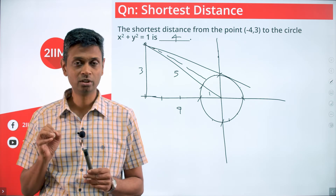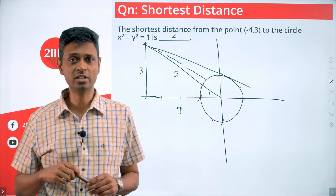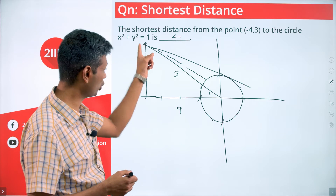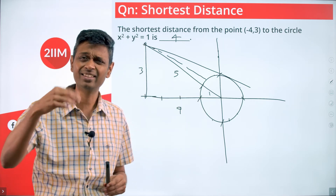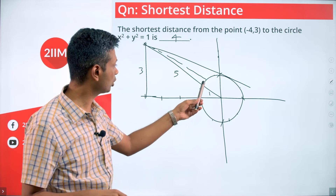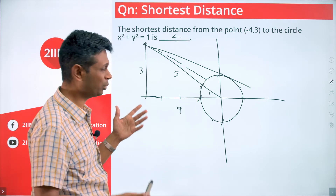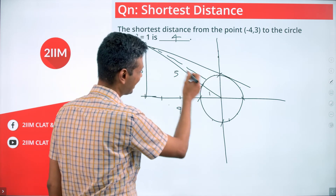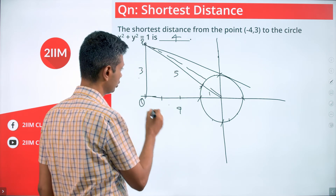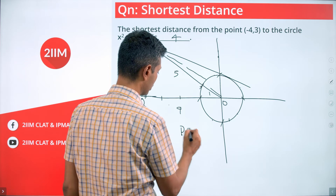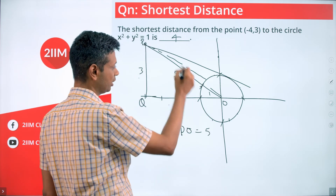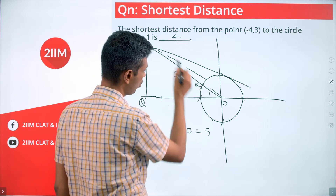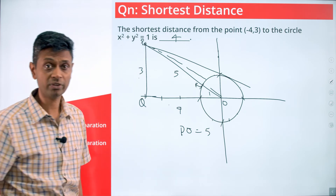It is a very interesting exercise to try to prove that — give it a shot. How do we compute it? The numbers are very nice: the point is (-4, 3), giving distances 4 and 3. This is a 3-4-5 right triangle. Call the point P, the closest circle point Q, and the center O. PO = 5. Call the point on the circle R — OR = 1 (the radius). So PR = PO − OR = 5 − 1 = 4. The shortest distance is 4.